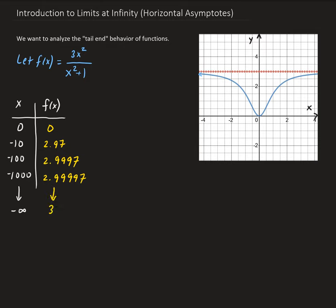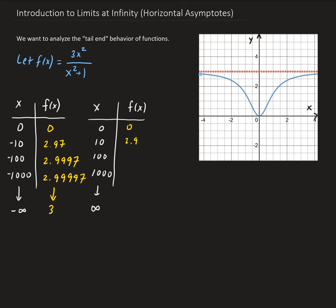Now let's build the second table using the positive values from the first table: 0, 10, 100, 1000 — these are approaching positive infinity. Because of our function, we get the same y-values: 0, 2.97, 2.997, and then 2.9997. So these are also approaching three.